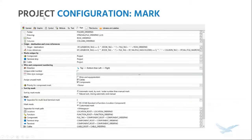To wrap up project configuration — the mark tab is another big one. You would typically come in here to set up formulas for drawing numbering, row numbering, component tags, terminal strip tags, etc. This will set up the numbering across the entire project. We are going to look at setting up these formulas in a future slide.